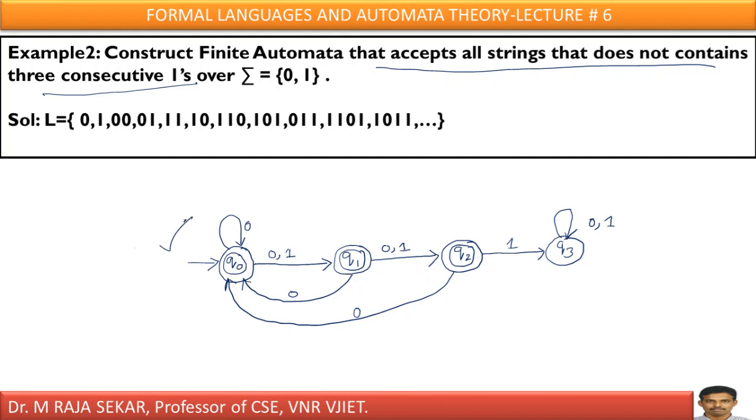Just draw the previous transition diagram. In my previous case, that means in example 1, q3 is the final state. Now we change it as non-final state, whereas q0, q1, q2 are non-final states. Now I converted them into final states.